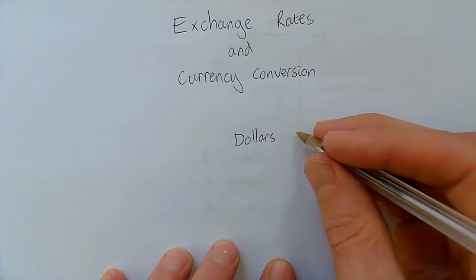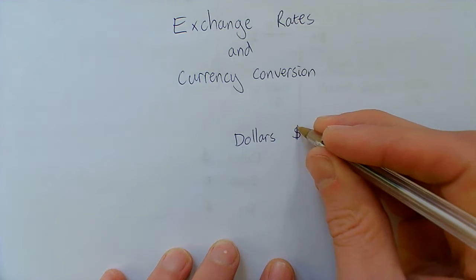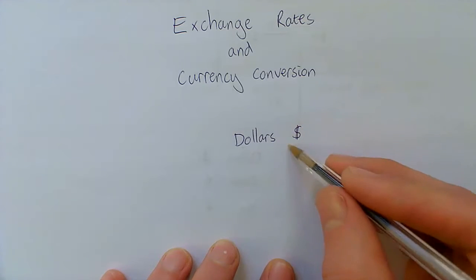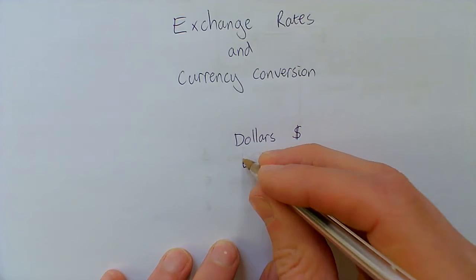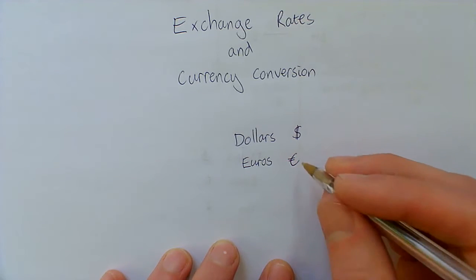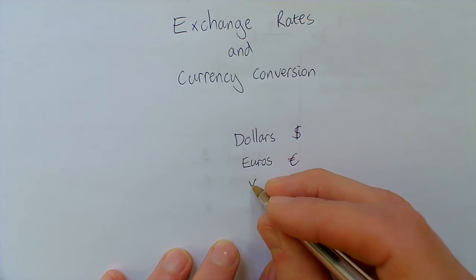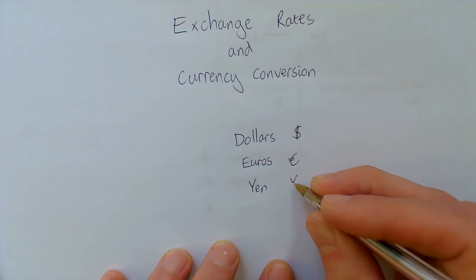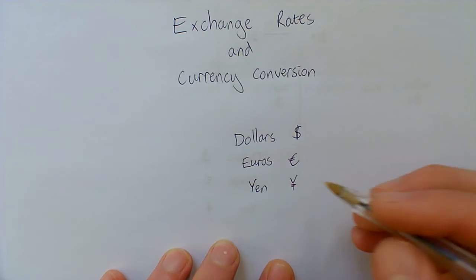So first one that you might well have found is dollars, which they use in the United States, and it has a funny symbol like that. Other ones that you might come across are euros, which have this kind of funny E. We also have in Japan, something like yen.